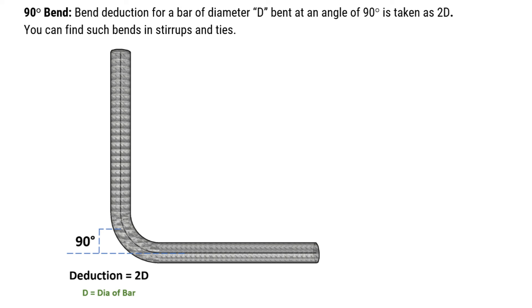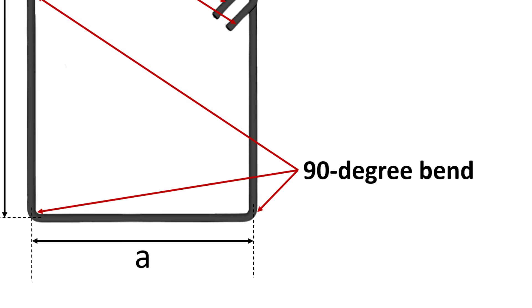For a 90 degree bend, the deduction is taken as 2 times D, and you can find such bends in stirrups and ties.